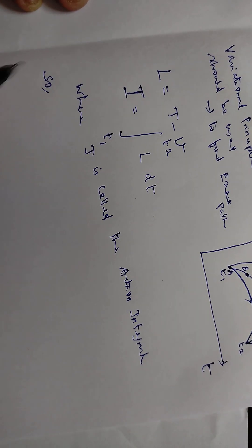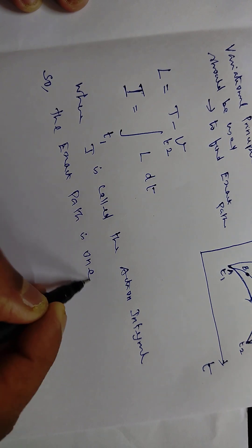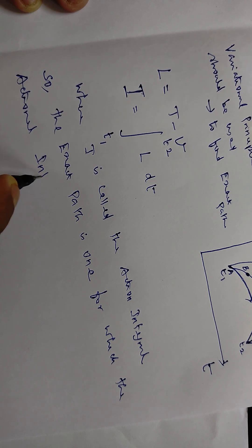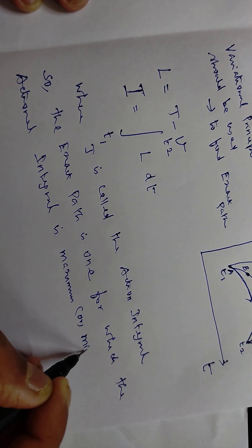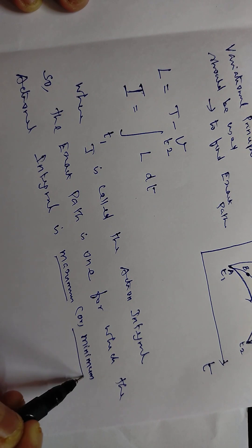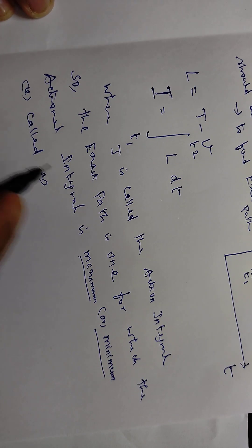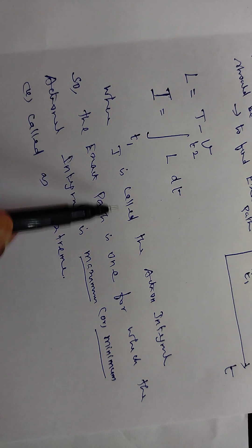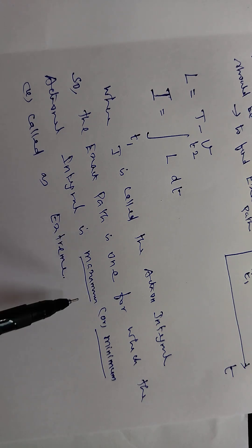The exact path is one for which the action integral is maximum or minimum — this maximum or minimum is called as extreme. So the exact path is one for which the action integral I is extreme.